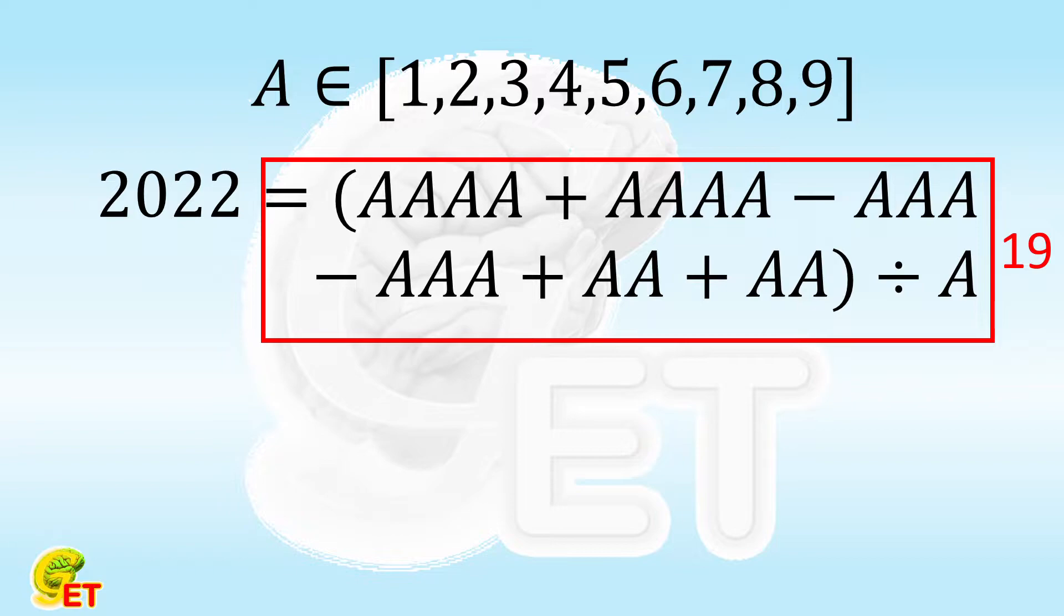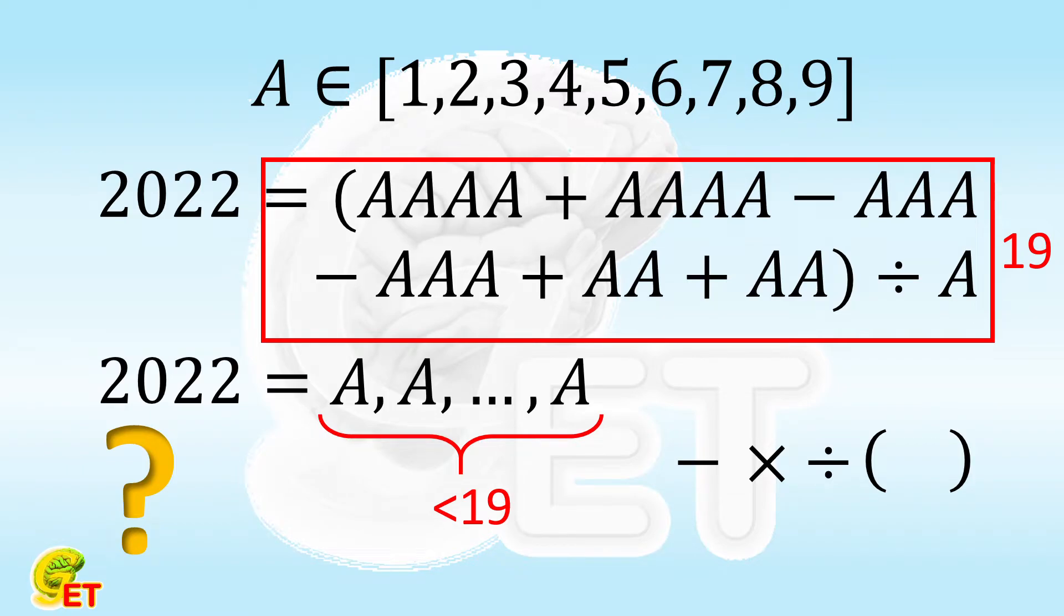For each digit A, we will still use the elementary arithmetic operations to represent 2022. But this time our goal is to use less than 19 digits each time. Are you ready? Let's go.